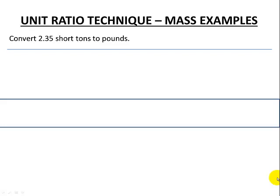Here's our unit ratio technique lesson for mass examples. So for this example, we want to convert 2.35 short tons to pounds.